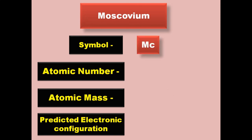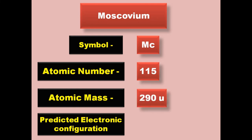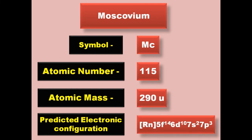Moscovium has symbol Mc, atomic number 115, atomic mass 290, predicted electronic configuration [Rn] 5f14 6d10 7s2 7p3. Moscovium is a post-transition metal and is expected to be solid at room temperature.